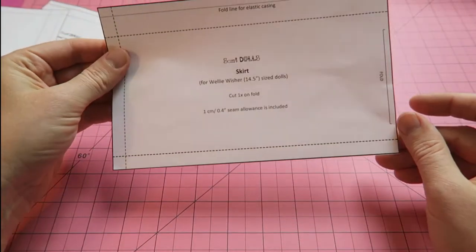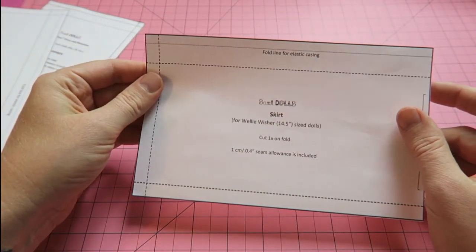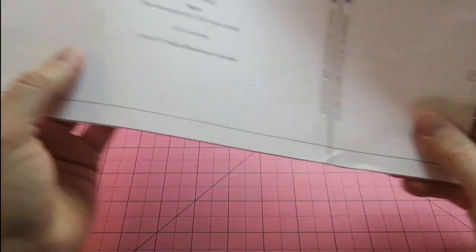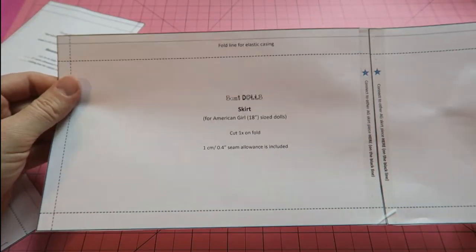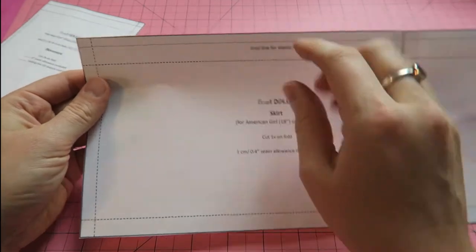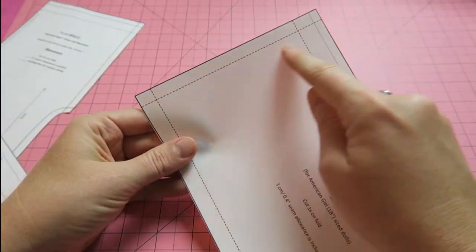In diesem Video schauen wir uns die Nahtzugabe an. Eine Nahtzugabe ist der Abstand zwischen der Stoffkante und der Naht und die kann verschieden groß sein zwischen 0,7 und mehreren Zentimetern.